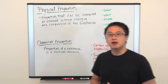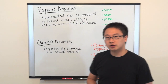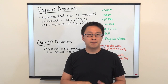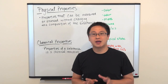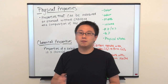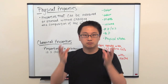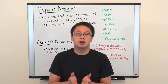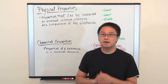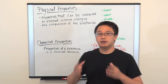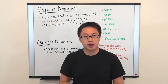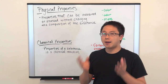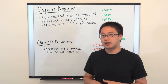Physical properties are the ones that can be measured or assessed without changing the substance's chemical composition. That means after we make the assessment or measurement, it is still the same material. Unlike physical properties, chemical properties are the ones that change during a chemical reaction — we describe how a substance reacts or what happens during a chemical reaction.